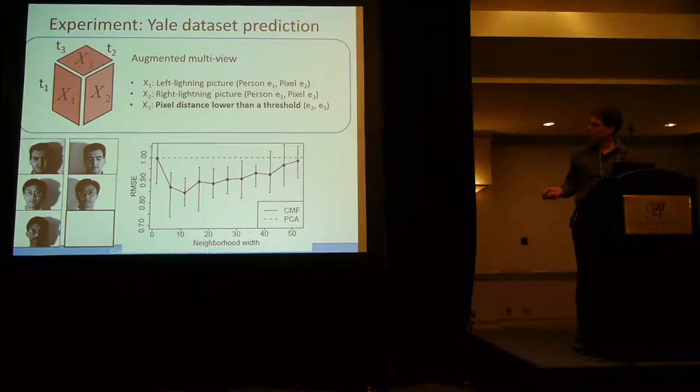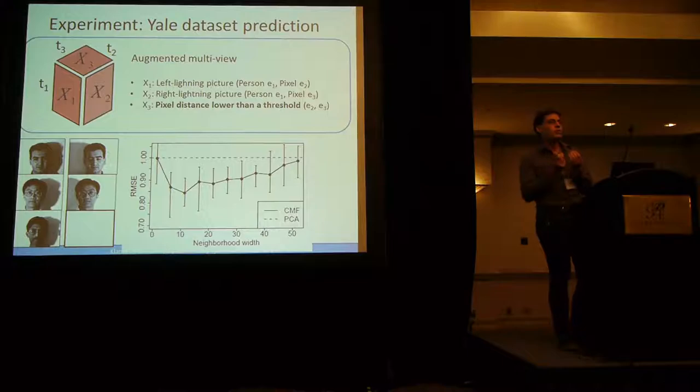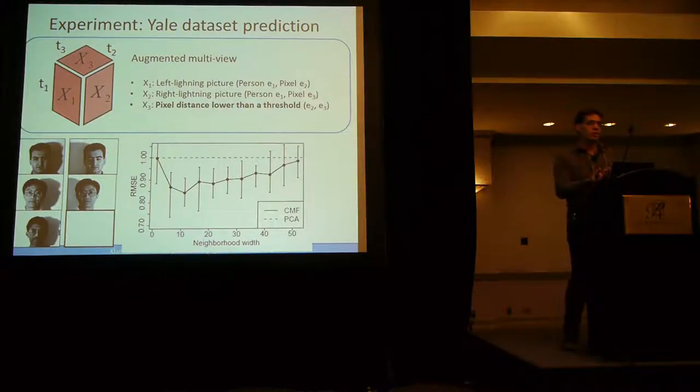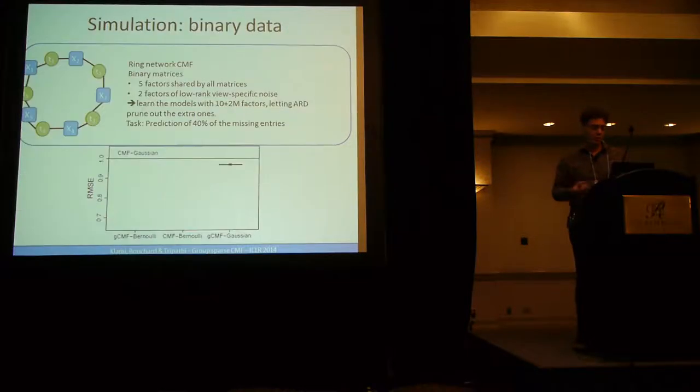And this is what we see in the results here, is that depending on the neighborhood width, so basically this is the width of the band of X3, you have an optimal neighborhood width of ten pixels, which tells you that indeed the proximity, the spatial proximity of pixels, if you take this into account in this dataset, helps in generalizing, in predicting the missing value.